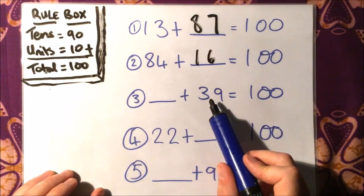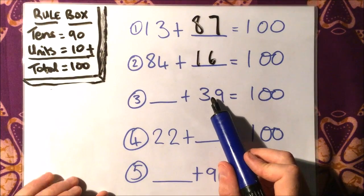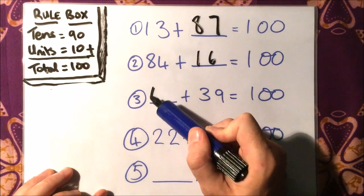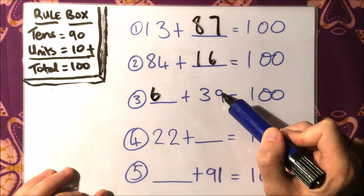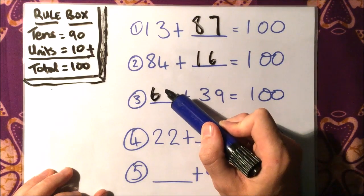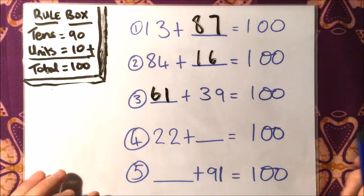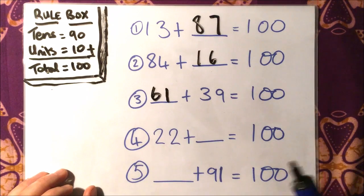What to add to 30 to make 90? I need 60, and then I only need 1 to add to my 9 to make another 10, so 61 and 39 is 100. Now this one, a lot of people will put 88.